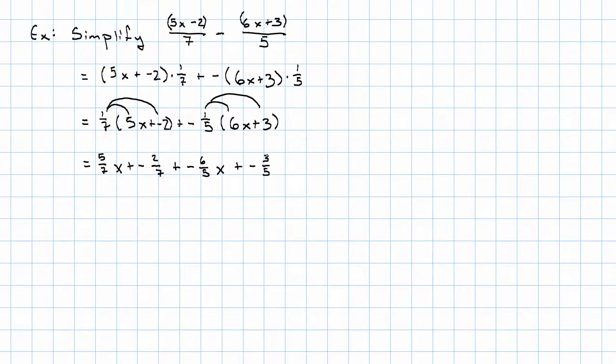Grouping symbols are gone. Now I want to combine like terms. I'll write my x terms first, my constant terms second. I've got 5 sevenths x plus negative 6 fifths x plus negative 2 sevenths plus negative 3 fifths. With longer expressions like this, I might miss copying a term, so I like to go through and check that I copied all the terms.